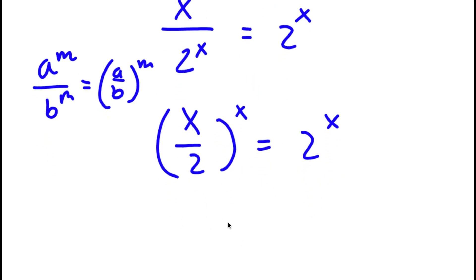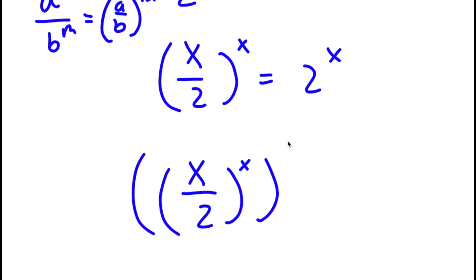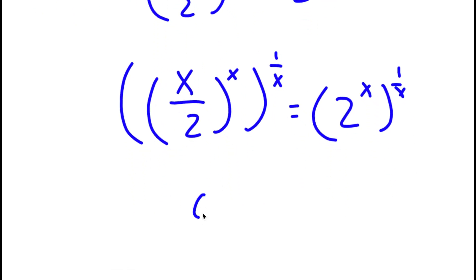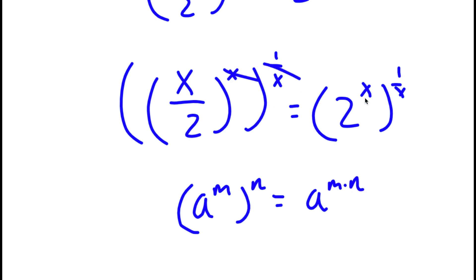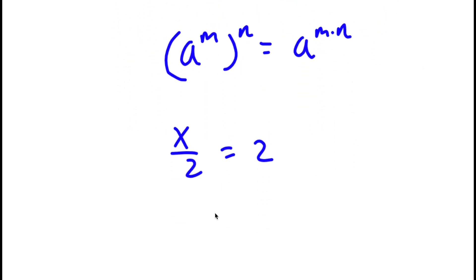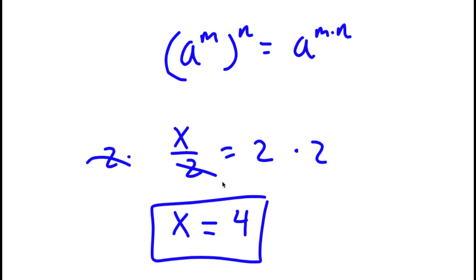Now I'm going to take both sides to the power of 1 over x. So I have x over 2 to the power of x to the power of 1 over x, equals 2 to the power of x to the power of 1 over x. Using the rule a to the power of m to the power of n equals a to the power of m times n, x times 1 over x cancels out on both sides, leaving x over 2 equals 2. Multiplying both sides by 2, I get x equals 4. So x equals 4 is my answer.